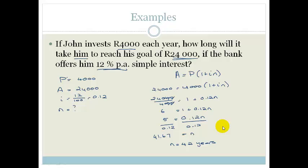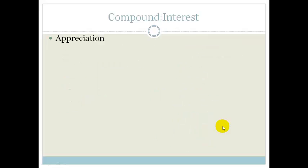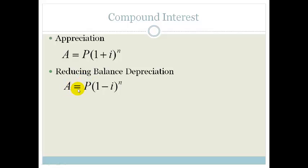Now, let's talk about compound interest. Remember that you had appreciation. Compound appreciation, which means the amount is getting bigger and bigger and bigger. And then, the equation is A equals P times 1 plus I all to the power of N. Or, we can have reducing balance depreciation. And that is when the amount is getting smaller and smaller and smaller. And all that changes is this plus. The new equation is A equals P times 1 minus I all to the power of N.